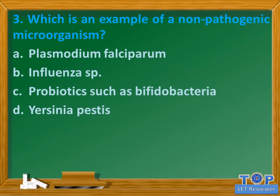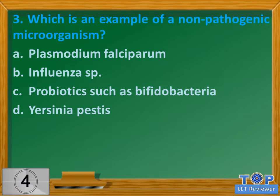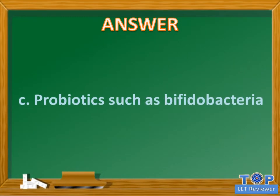Question number 3. Which is an example of a non-pathogenic microorganism? A. Plasmodium falciparum. B. Influenza sp. C. Probiotics such as bifid bacteria. D. Yersinia pestis. Answer: C. Probiotics such as bifid bacteria.